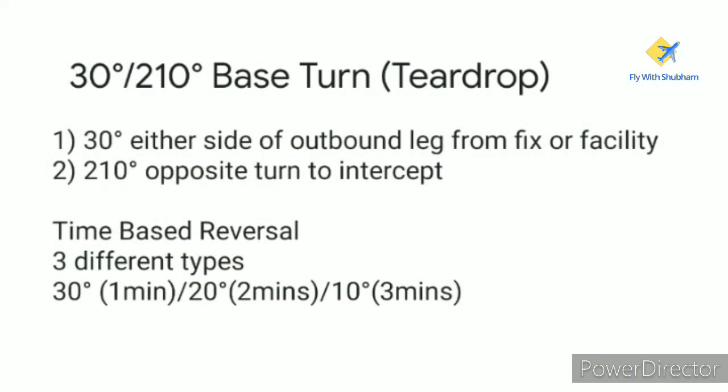In this teardrop time-based course reversal, we have two major steps. The first is a 30 degree turn either side of the outbound leg from a fix or facility. The second step is a 210 degree opposite turn to intercept the final approach course inbound.